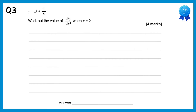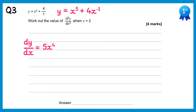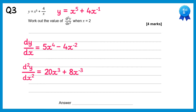For this question we need to find the value of d²y/dx² when x equals 2. We'll rewrite 4/x as 4x⁻¹. For dy/dx: differentiating x⁵ gives 5x⁴, and differentiating 4x⁻¹ gives negative 4x⁻². Then differentiating again for d²y/dx²: 5x⁴ gives 20x³ and negative 4x⁻² gives positive 8x⁻³, which you could rewrite as 8 over x³.